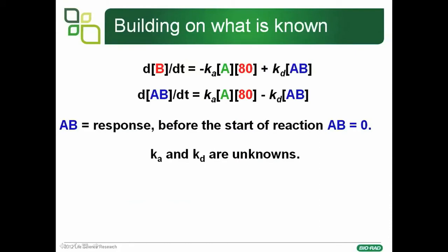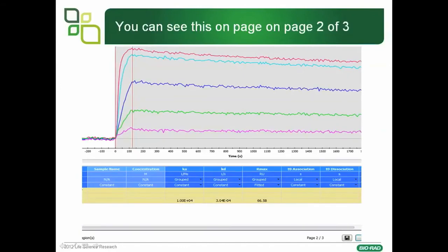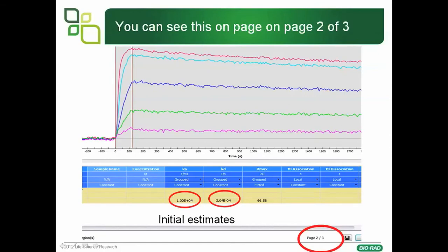AB is the formation of the complex. Before the start of the reaction, the amount of AB is zero, so we can put zero in for AB at the start of the reaction, and Ka and Kd remain as the unknowns. The software makes an initial approximation of the rate constants — in the example shown, the association rate constant is 10⁴ and the dissociation rate constant is 3×10⁻⁴. This is what you see on page 2 of 3 in the Proteon kinetic analysis — these values appear before you get your actual values, representing the initial estimates of the rate constants.